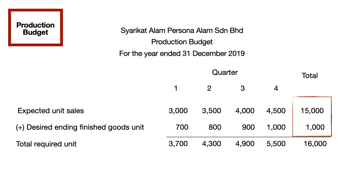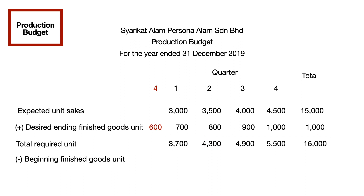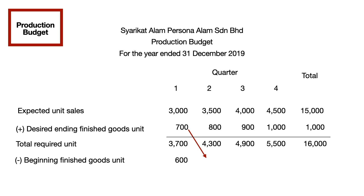Next, you will be planning the beginning finished goods. To get this number, you need to assume that 20% from the first quarter of that year's sales is actually the ending goods for the last quarter's sales of the previous year. Then, the ending goods for the last quarter of the previous year will be the beginning goods for the first quarter of the year. All the ending goods of each quarter will be the beginning goods for the next quarter.